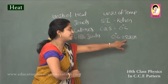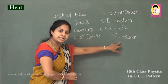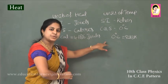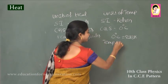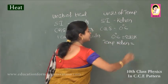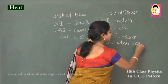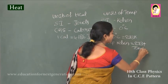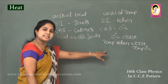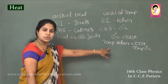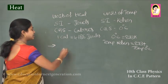When temperature is measured in kelvin, it is known as absolute temperature. Kelvin can be converted to degree Celsius using the relation: temperature in kelvin equals 273 plus temperature in degree Celsius. So degree Celsius can also be converted back into kelvin.